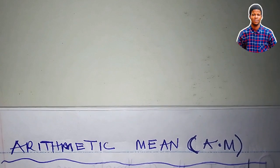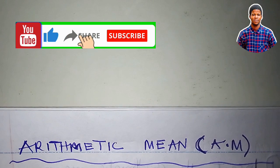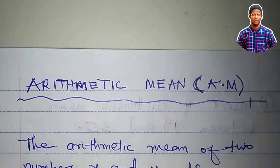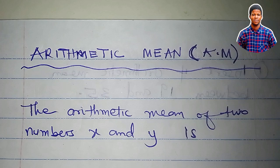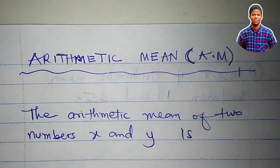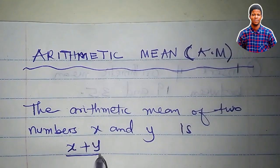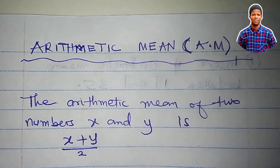In this tutorial, we'll talk about arithmetic mean as it concerns the linear sequence, or the arithmetic progression. What is the arithmetic mean of two numbers? The arithmetic mean of two numbers, let's say x and y, is given by the formula that says the sum of the numbers divided by 2. We can actually say the average of the two numbers is the arithmetic mean.